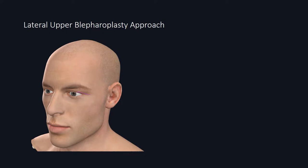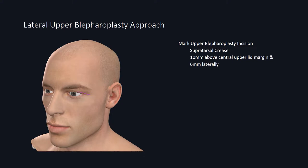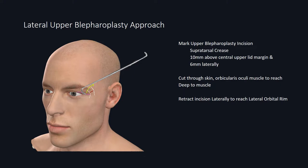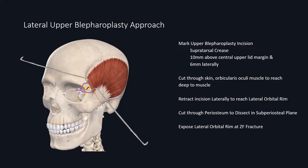A variation that provides a more cosmetically pleasing result is the upper blepharoplasty approach, which may be an option in younger patients. Mark an upper blepharoplasty incision using the supratarsal crease, generally 10 mm above the central upper lid margin and 6 mm laterally as it curves down. Cut through skin and orbicularis oculi muscle to reach deep to the orbicularis oculi. Pull the incision over towards the lateral orbital rim with a retractor, then dissect over the periosteum to reach the subperiosteal tissue plane. Expose the entire lateral orbital rim along the anterior and posterior aspect, as well as the zygomatic frontal suture or nearby fracture site.